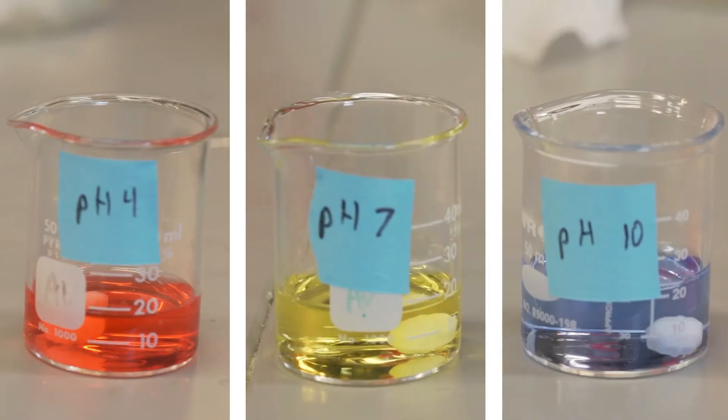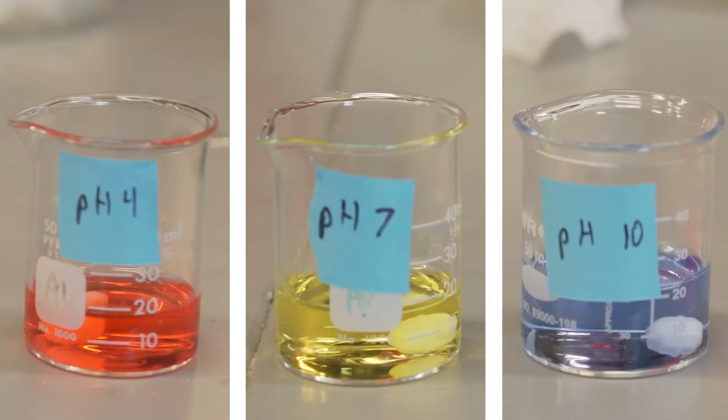Before we can use the pH meter to take a measurement, we first need to calibrate it using a series of standard buffers with known pHs of 4, 7, and 10.